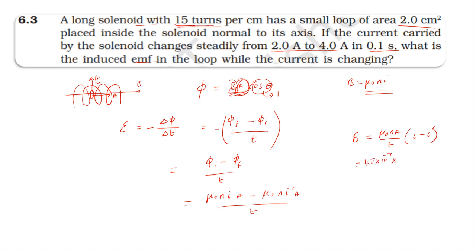Substituting values: μ₀ = 4π×10⁻⁷, n = 15 turns per centimeter equals 1500 turns per meter, A = 2 centimeter square equals 2×10⁻⁴ meter square, current I_initial - I_final = 2 - 4, divided by time 0.1 second.